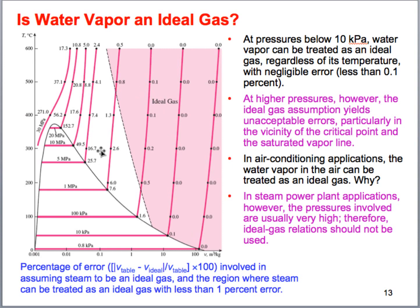As we increase pressure toward the critical pressure of water, or increase toward the critical temperature, we can no longer apply the ideal gas equation. Moving toward higher pressures, the errors become unacceptably high and the ideal gas assumption no longer holds.